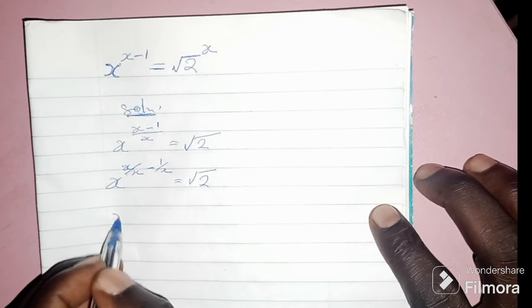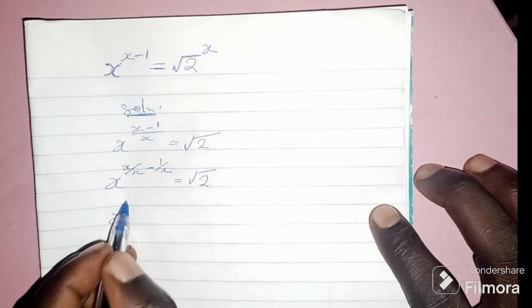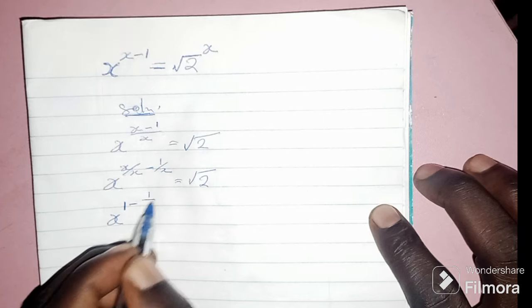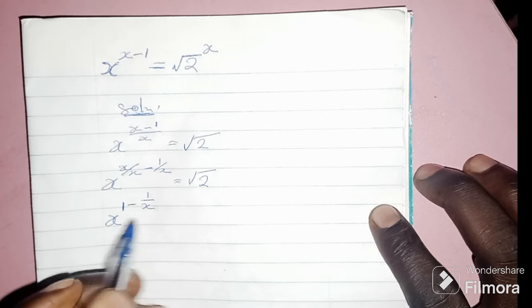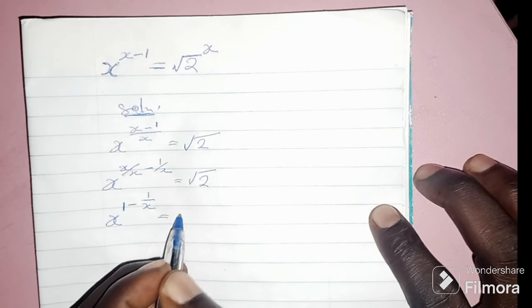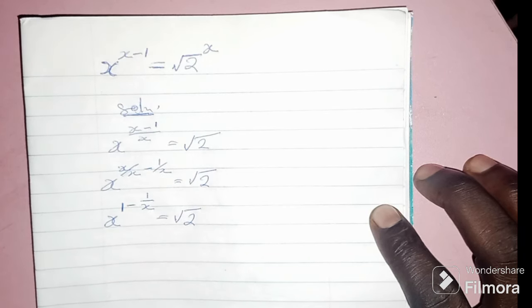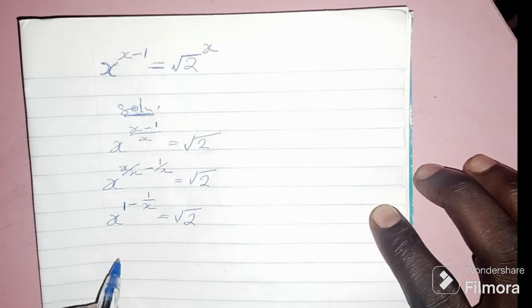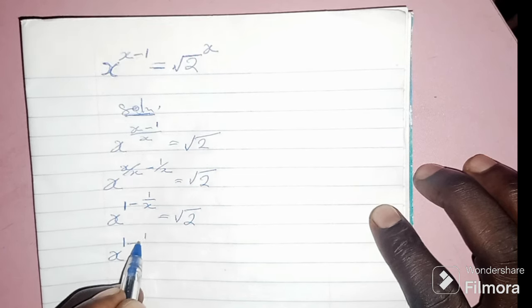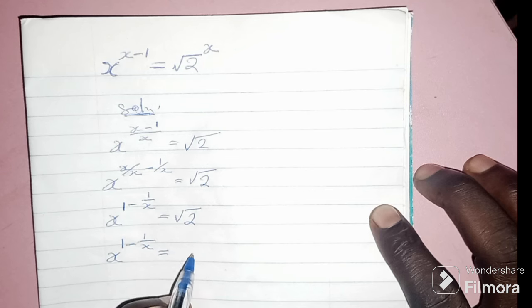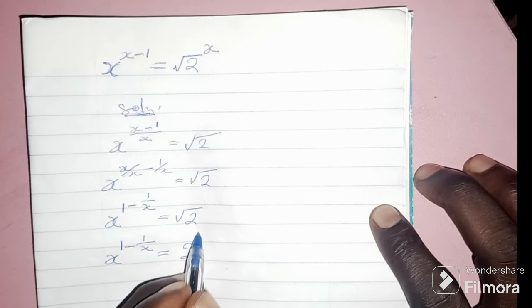Then, x to the power of x divided by x is 1, so we get x to the power of 1 minus 1 over x, equal to square root of 2. The square root of 2 can be written as 2 to the power of 1 over 2.